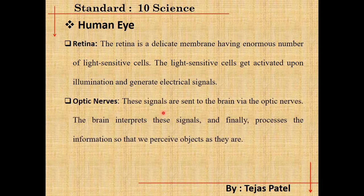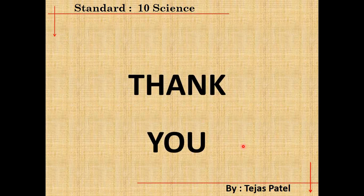The final part is the optic nerve. Whatever electrical signals are generated by the retina are sent to the brain by the optic nerve. The brain interprets these signals and processes the information, allowing us to perceive objects as they are. This completes the function of the human eye. I hope all of you are clear about the human eye and its parts. Thank you very much.